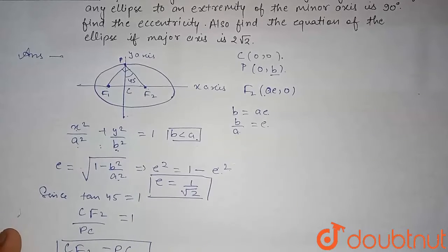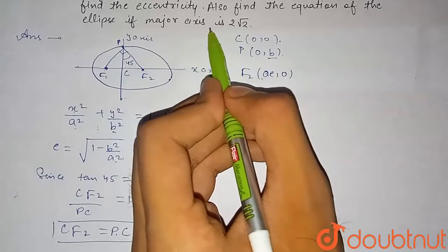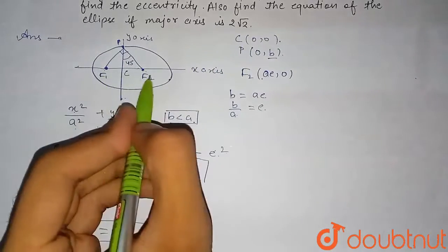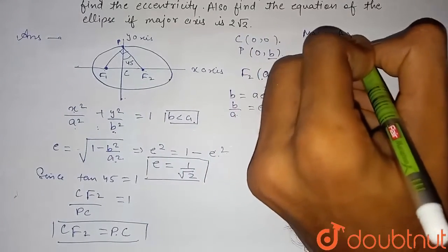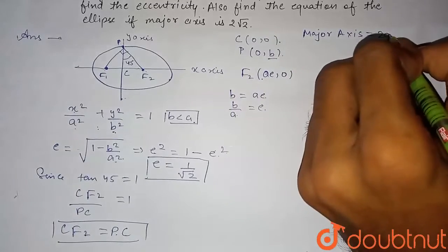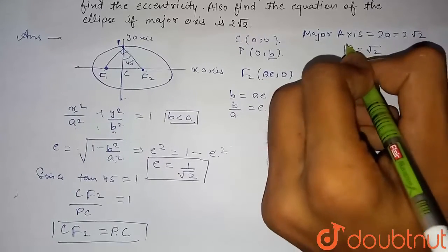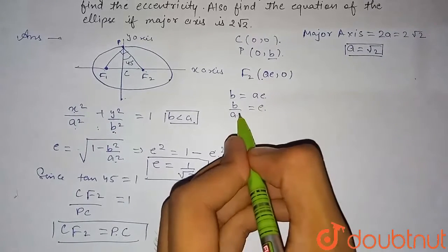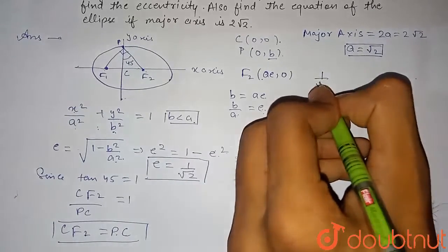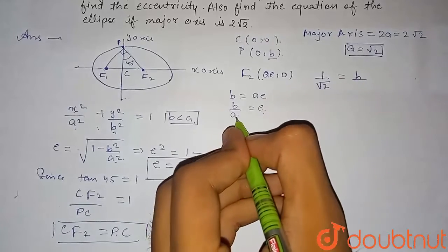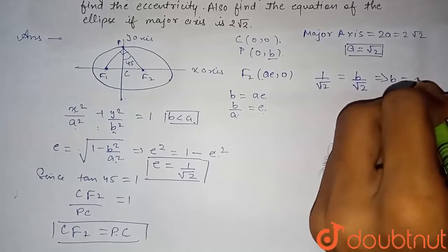Now we find the values of a and b. The major axis is given as 2√2, and the major axis length equals 2a, so 2a = 2√2, giving a = √2. Substituting into e = b/a: 1/√2 = b/√2, so b = 1.